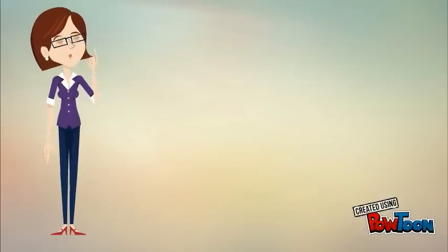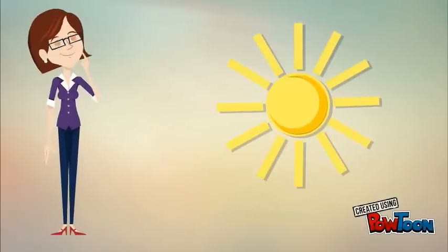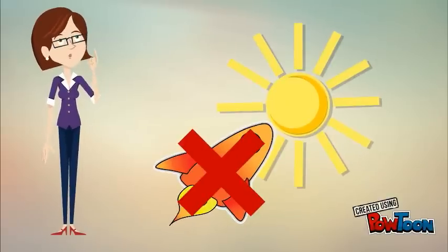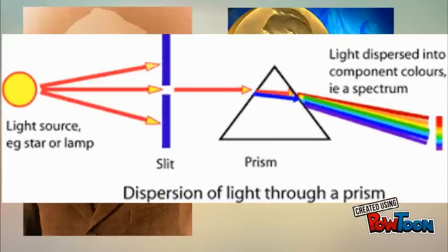Have you ever wondered what the Sun is made of? How can we find out if we can't go there? Well, thanks to CV Raman, who's the first Indian to get a Nobel Prize in physics, he investigated the Raman effect.